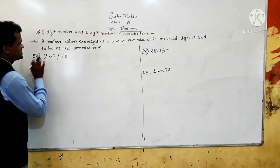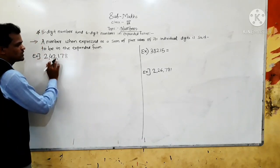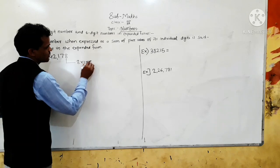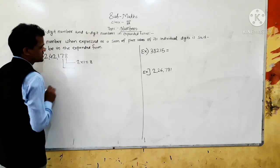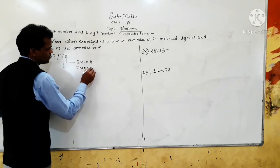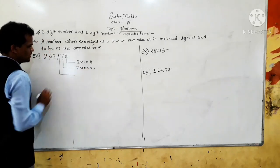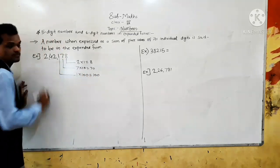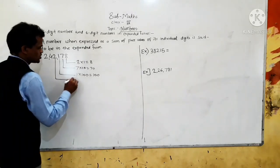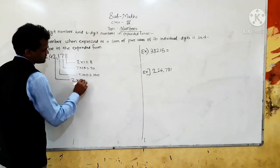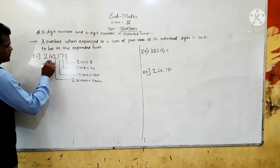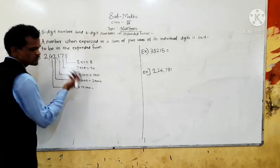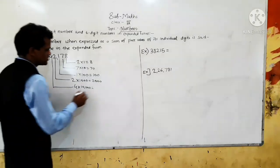So, here this number is 242,178. The place value of 8 is 8 × 1 = 8. Place value of 7 is 7 × 10 = 70. Place value of 1 is 1 × 100 = 100, because it comes at the hundreds place. Place value of 2 is 2 × 1,000 = 2,000. And place value of 4 is 4 × 10,000 = 40,000, because it comes at the ten-thousands place.